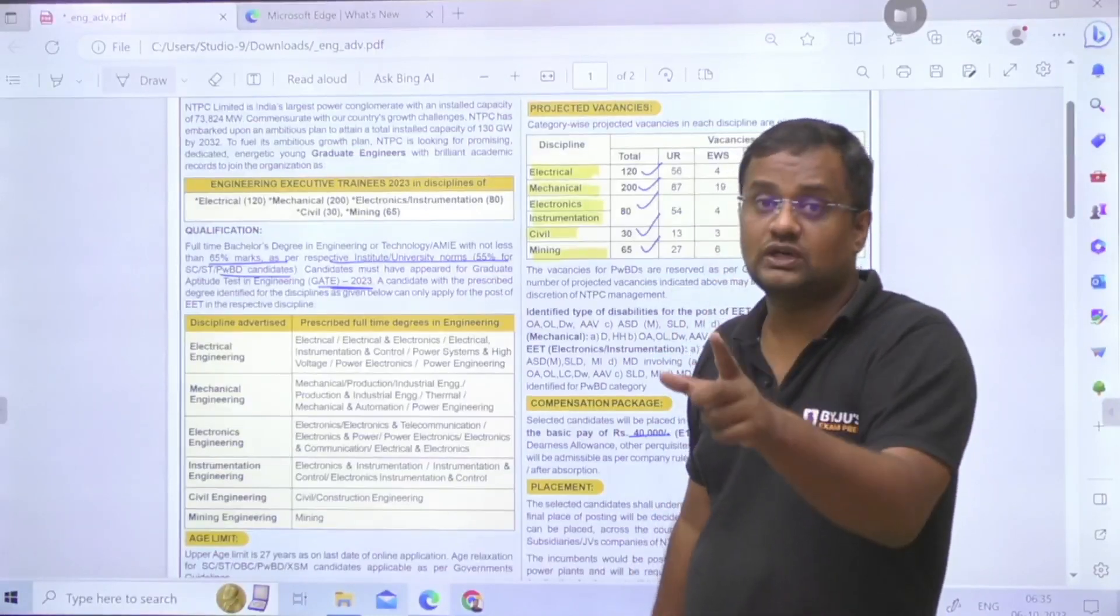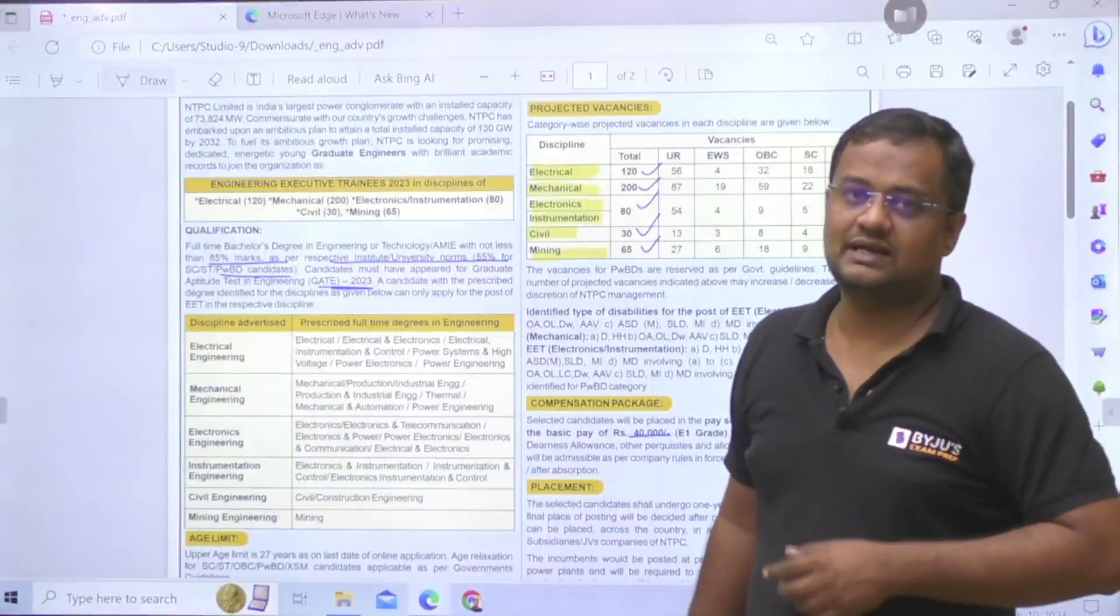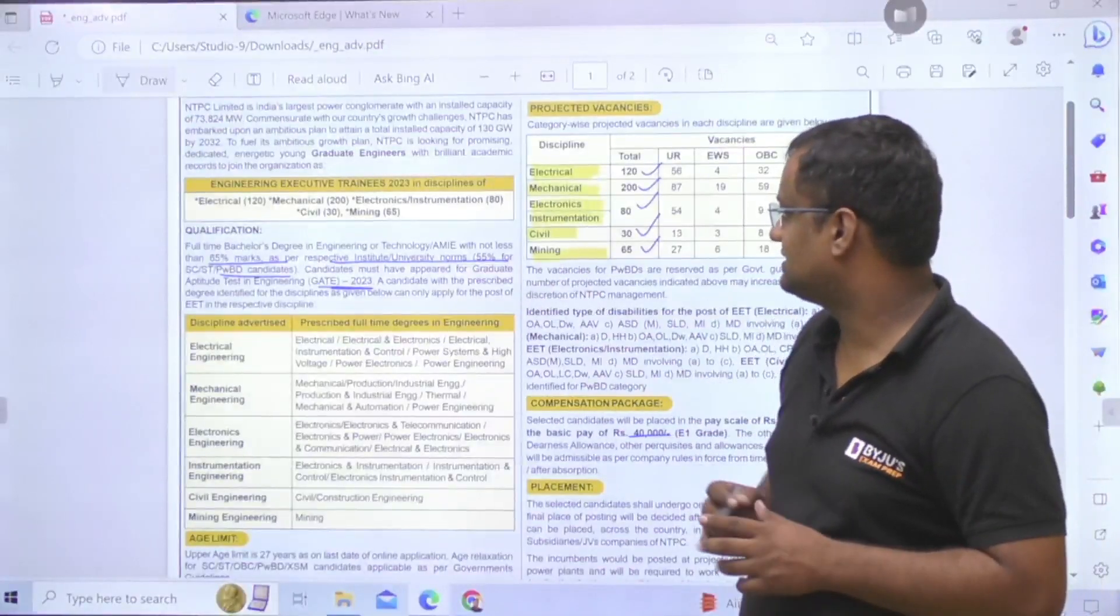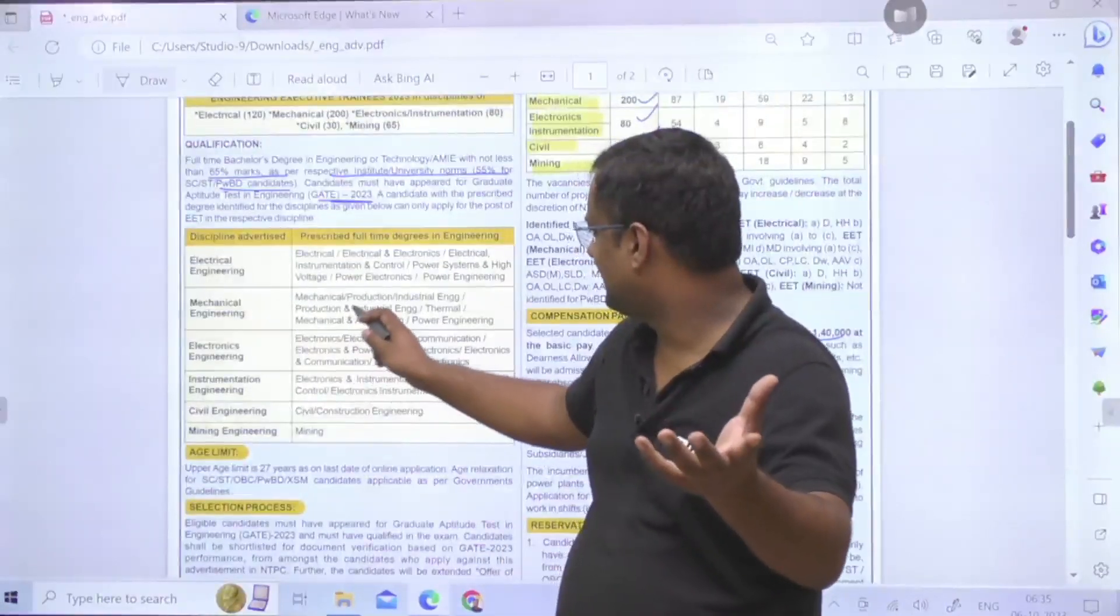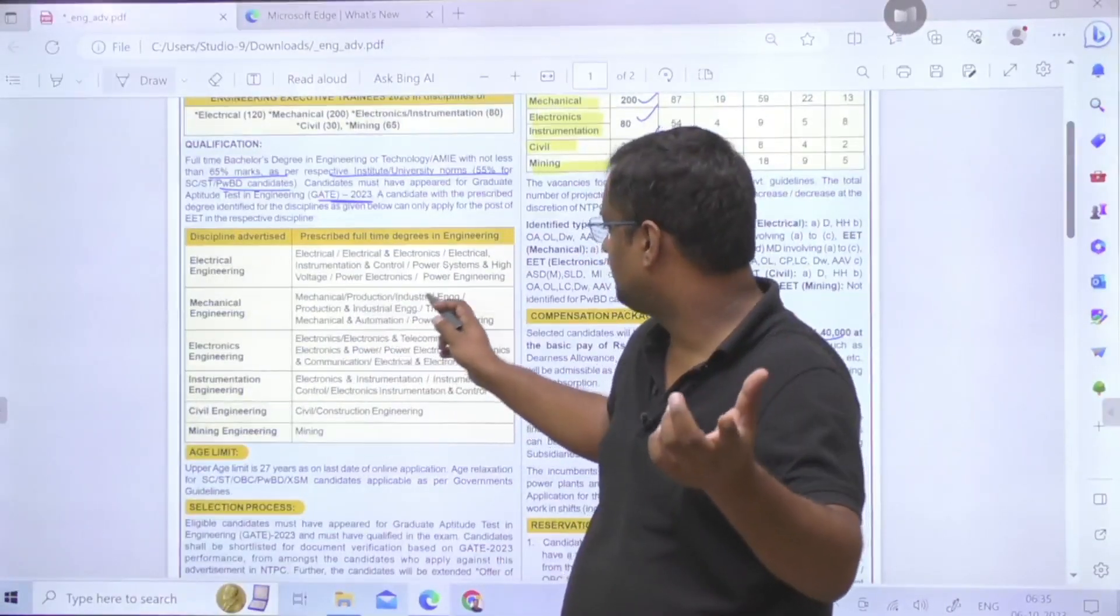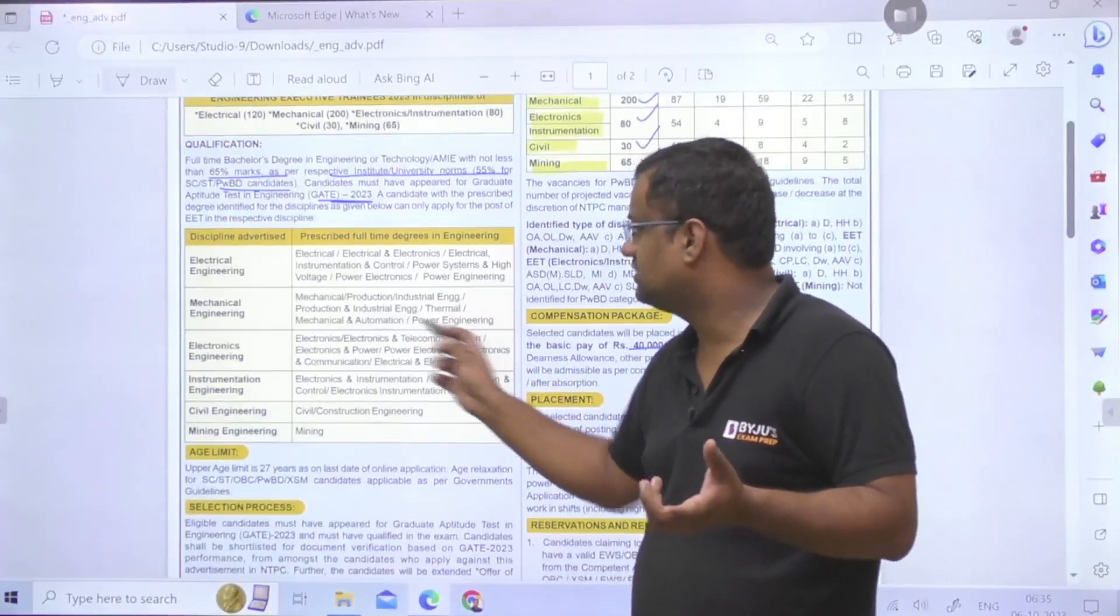For all those students who are 2024 aspirants, keep in mind, if you have a final year, 65% maintain, and 55% for SC/ST and PWD. Now if suppose, let me give an example, if you are from Mechanical BTech, from Production, from Industrial, from Thermal, Mechanical Automation, Power Engineering, then you can apply in this seat of Mechanical of 200 seats.